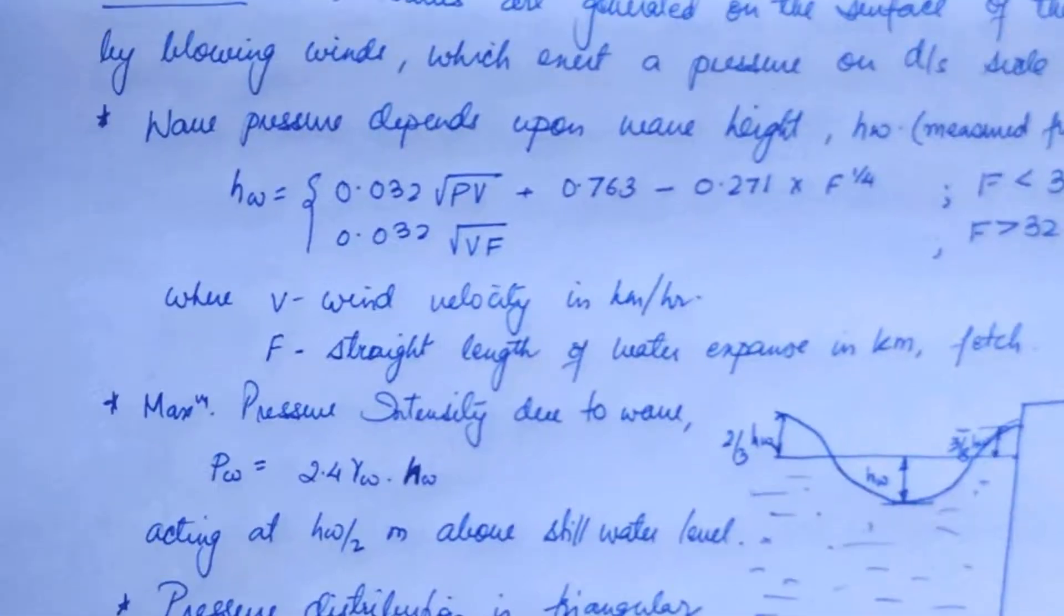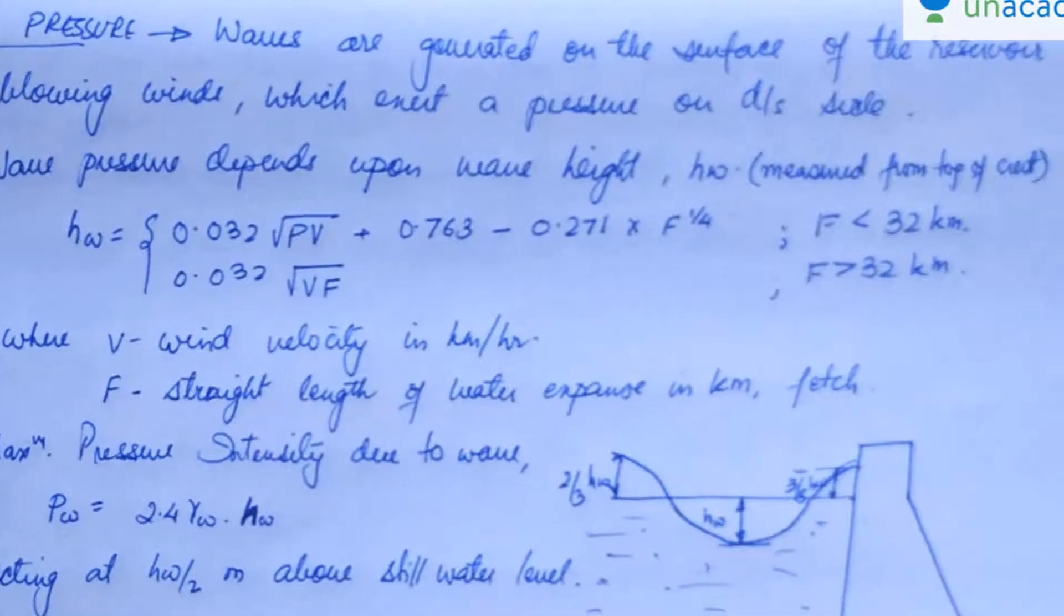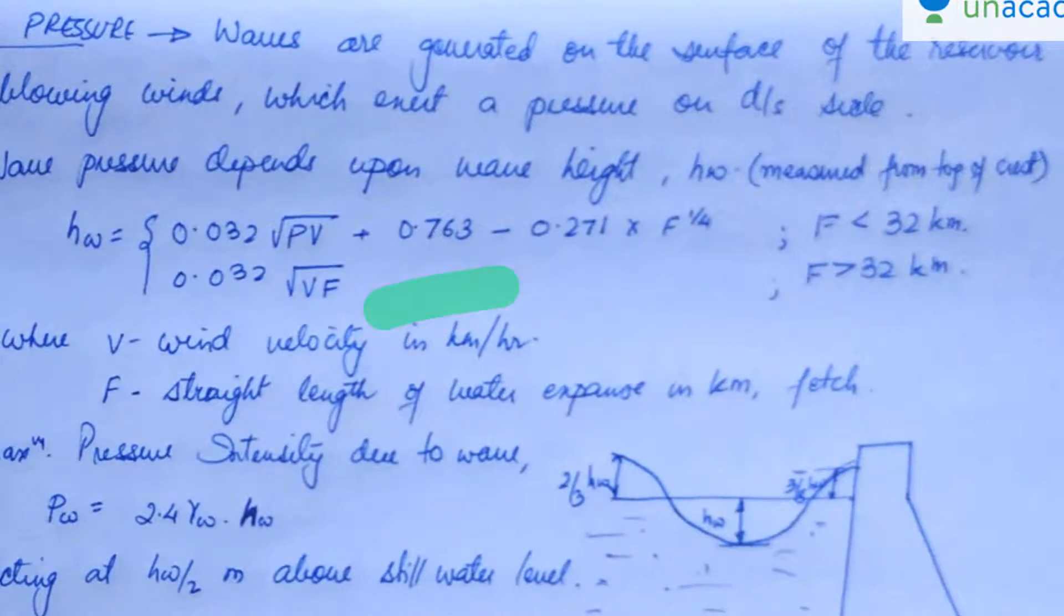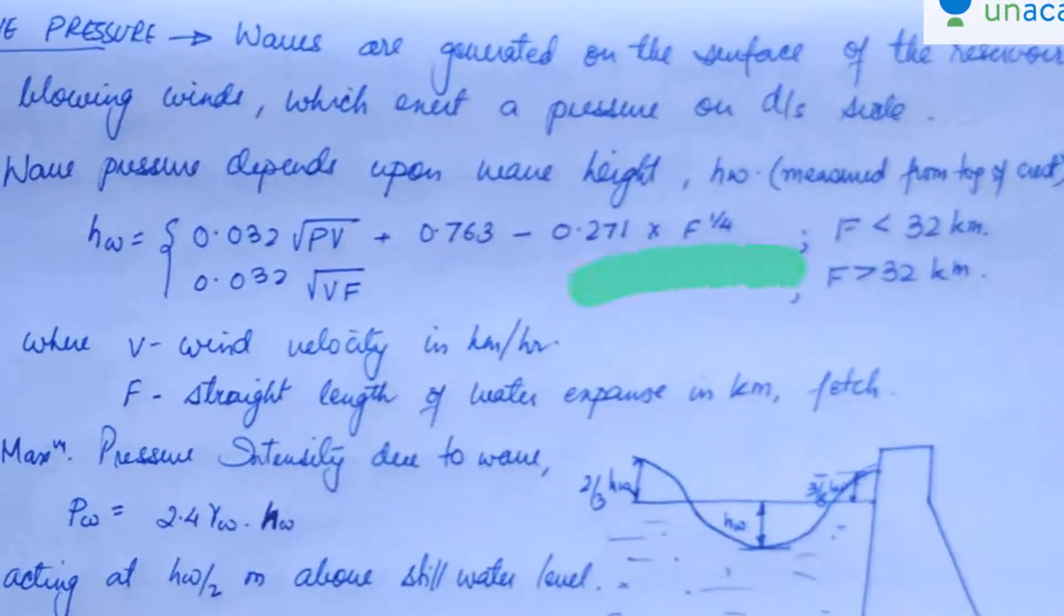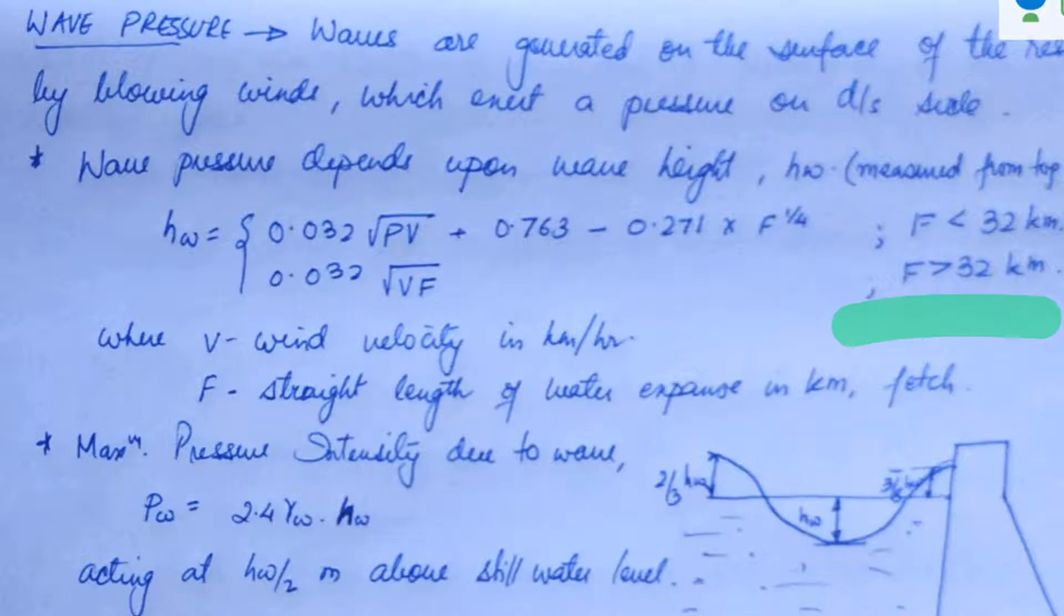And hw is actually equal to 0.032 under root vf plus 0.763 minus 0.271 multiplied by f raised to power 1 by 4, in case f is less than 32 kilometer. What is f? f is the straight length of water expanse in kilometer, also called fetch. And if f is greater than 32 kilometer, in that case we take this hw to be equal to 0.032 under root vf. What is v? The wind velocity in kilometer per hour.